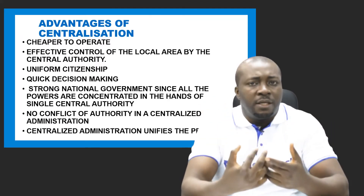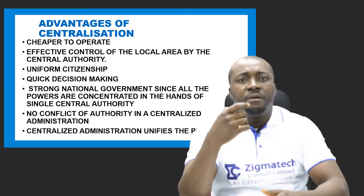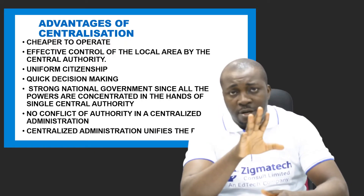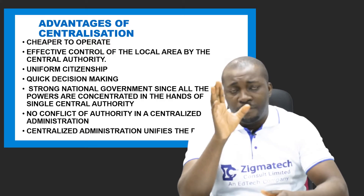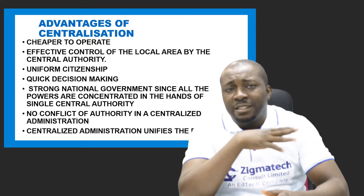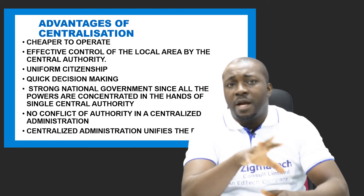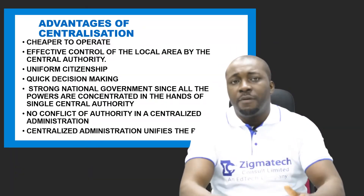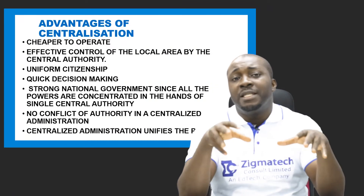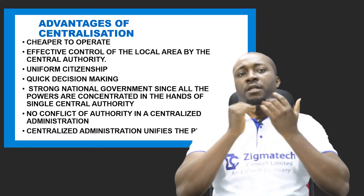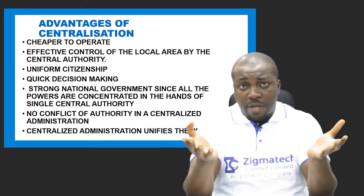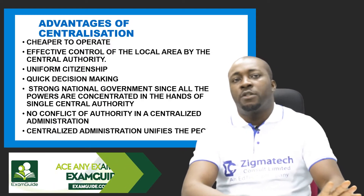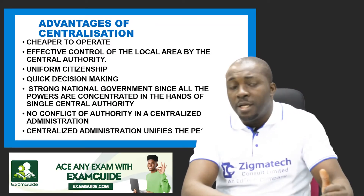There is quick decision making. For example, in a family where authority comes from only one particular person, that person can easily take decisions. In organizations where employers concentrate all powers in themselves, whatever they decide is final. The same applies to government — when a government decides to centralize power, decisions come from that single source of power quickly. That is why some states decide to centralize political powers.